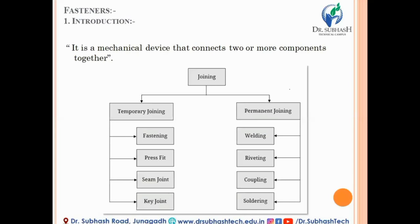These two classifications are made purely based on the requirement of the particular parts — that is, whether the two parts need to be assembled and disassembled within some frequent periodic time. Temporary joining can be achieved in four ways: fastening with a nut and bolt system, press fit, seam joint, and key joint. In the case of fastening, by clamping, tightening, screwing, and unscrewing, two plates or machine components can be fastened.